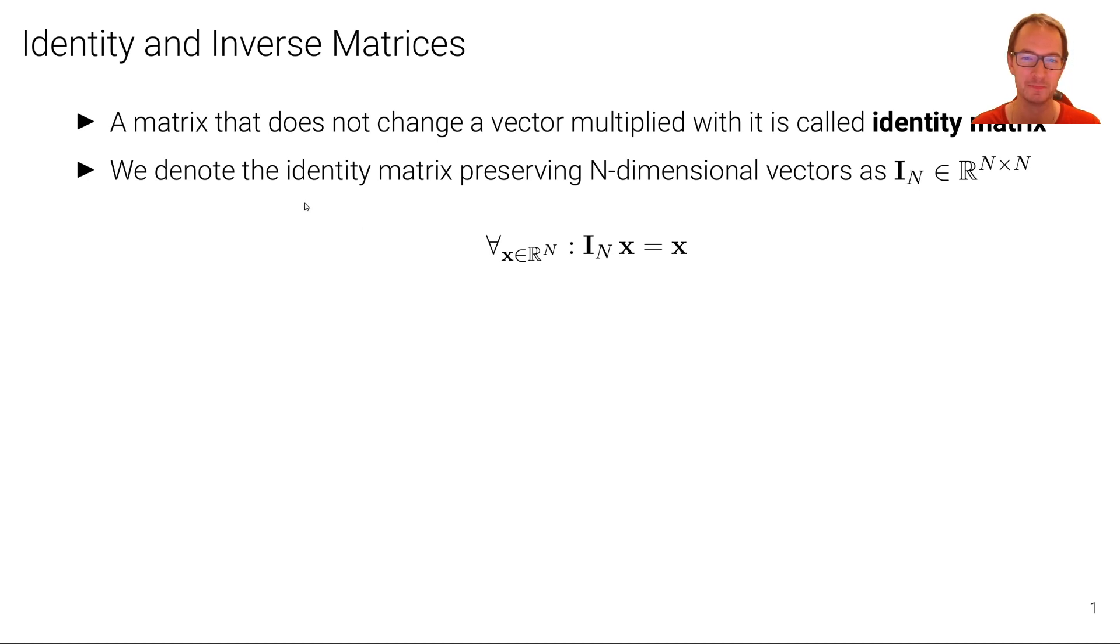So what does it mean that this matrix preserves n dimensional vectors? Well that simply means that for any possible vector from that vector space R^n, if we take any of those, any random vector, we can multiply that with that matrix and that vector is preserved. That means after multiplication we get the same vector than before the multiplication.